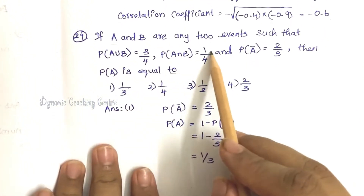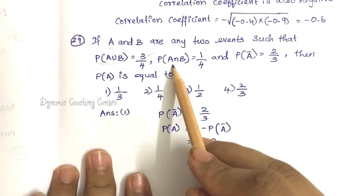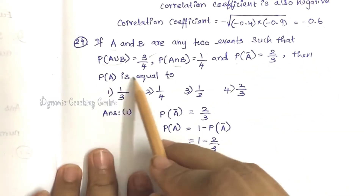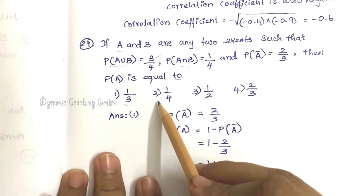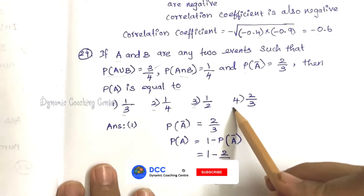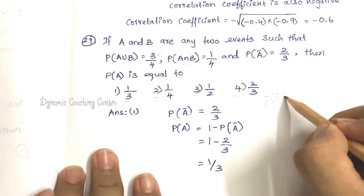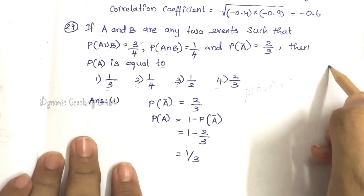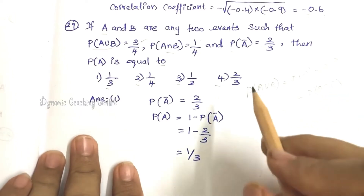Next question: A and B are any two events such that probability of A union B equals 3 by 4, probability of A intersection B equals 1 by 4, and probability of A bar equals 2 by 3. Then probability of B is equal to — option 1: 1 by 3, option 2: 1 by 4, option 3: 1 by 2, option 4: 2 by 3. Using the formula: P(A∪B) = P(A) + P(B) − P(A∩B).